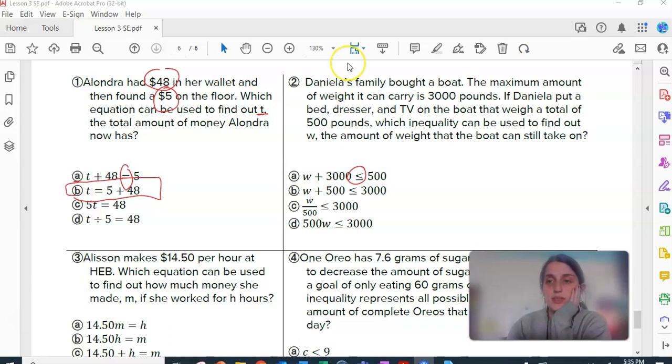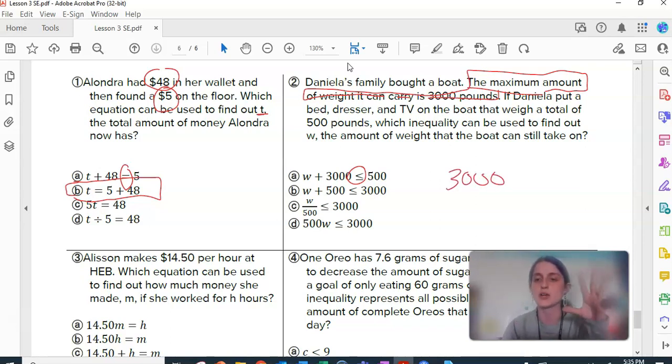Daniela's family bought a boat. The maximum, that means the most amount of weight it can carry, is 3,000 pounds. Now, I personally have a hard time kind of thinking about what symbol that would be. So, I like to come up with examples in my head that are not actually on the page. Just so that I really understand what's happening. The maximum amount of weight it can carry is 3,000 pounds. Okay, so if we've got 3,000, can we have something bigger than 3,000?